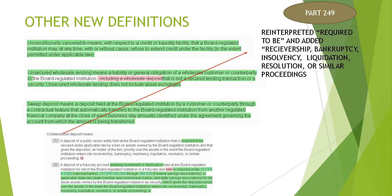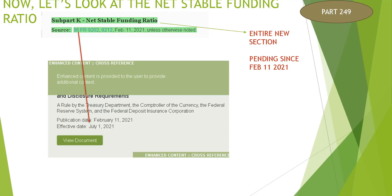They've also reinterpreted what a collateralized deposit means by adding new language such as 'required to be' and adding receivership, bankruptcy, insolvency, liquidation, resolution, or similar proceedings. We also have unconditionally cancelable, which means with respect to a credit or liquidity facility that a board-regulated institution may at any time, with or without cause, refuse to extend credit under the facility to the extent permitted by applicable law. Those are all the definitions that fall within this new standard.